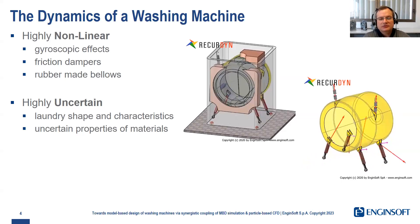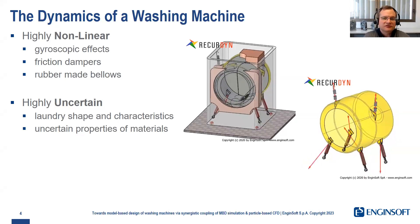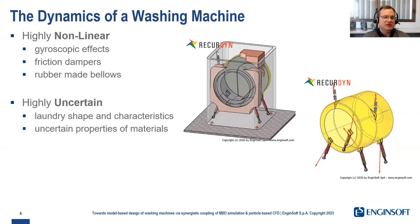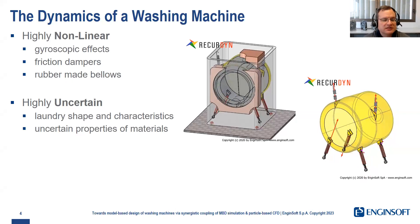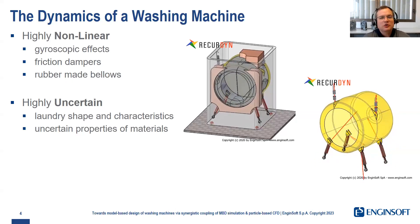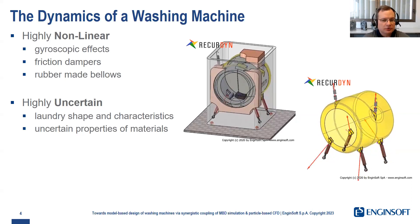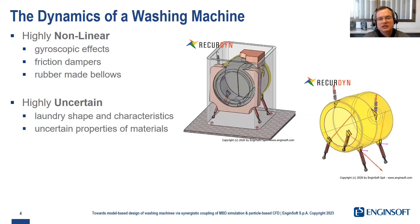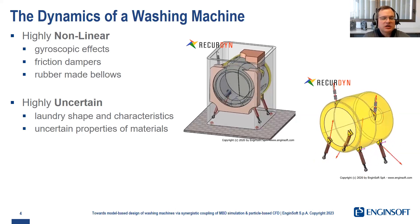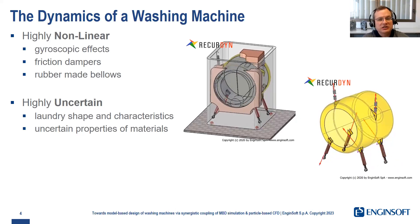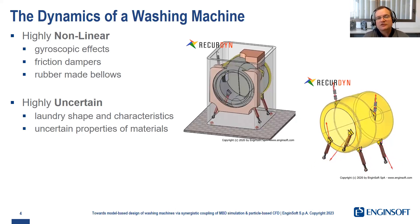Friction dampers have a very complicated behavior connected with temperature, motion amplitude, and speed. And then we have some rubber connections between the cabinet and the moving body — the tub. The main bellows is on the front for horizontal axis machines, and these bellows affect dynamics a lot. The system is also uncertain because you never know what the level of imbalance is inside your rotating drum. The shape and position of the laundry is completely uncertain, and you may also have uncertainty in certain material properties, especially with plastic components.